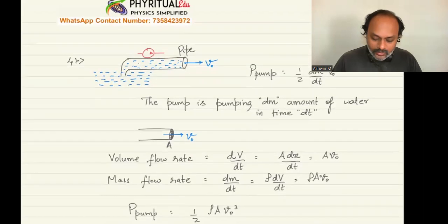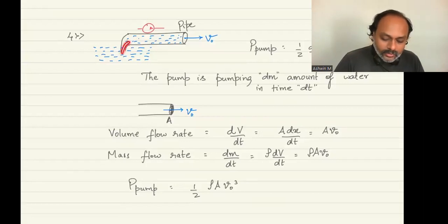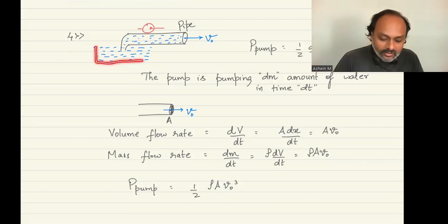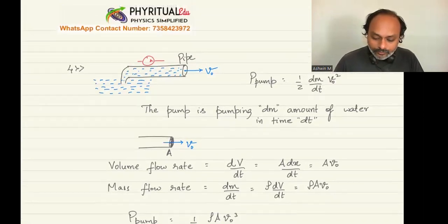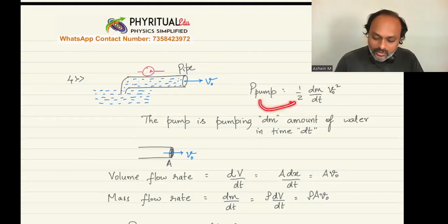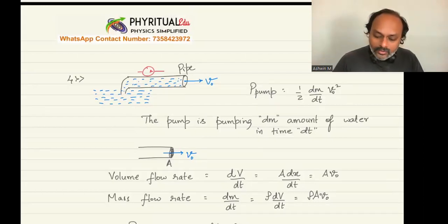Now suppose you have a scenario where water is given only kinetic energy, without any height rise. There is a pump pumping water from a tank where the velocity of water is zero, and when pumped out the water has gained velocity v₀. In this case, power of the pump required is simply half times dm/dt times v₀ squared. There is no need to do work against gravity, so we simply write power of the pump as half dm/dt times v₀ squared.